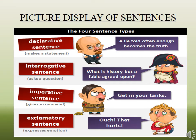This is the picture display of sentences of all four kinds. The first is the declarative sentence, which makes a statement. As shown in the picture, it says: 'A lie told often enough becomes the truth' — meaning when a lie is repeated often enough, it sometimes becomes the truth. The second kind is the interrogative sentence, which asks a question. As shown in the picture: 'What is history but a fable agreed upon?'